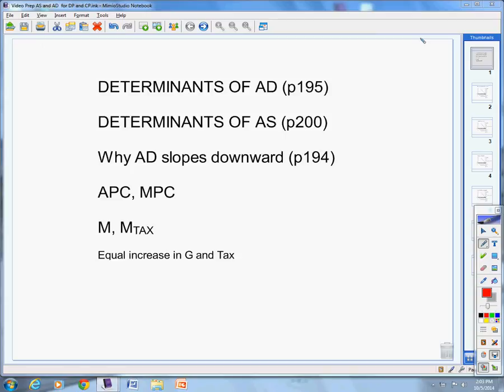First, I want to remind you that you need to know the determinants of aggregate demand, the determinants of aggregate supply. You need to know the three reasons aggregate demand slopes downward. You need to understand the average propensity to consume and especially the marginal propensity to consume because this ties in to the multiplier and that generates the tax multiplier.